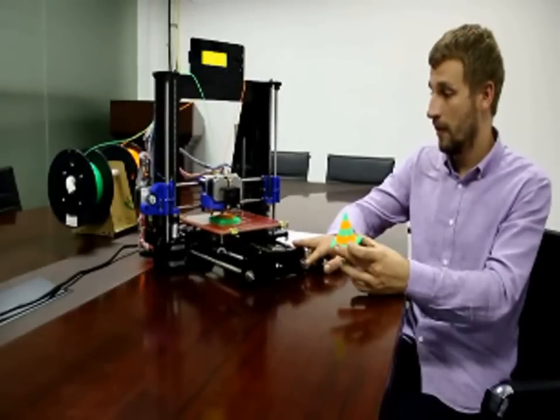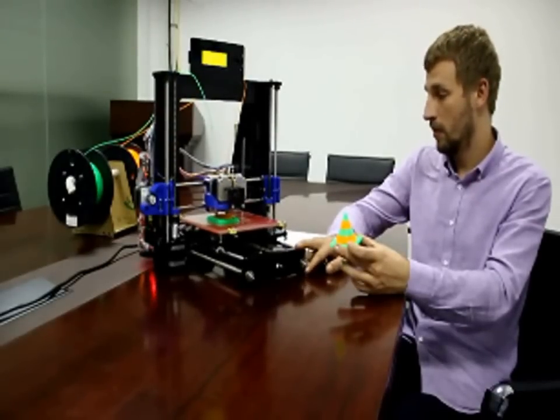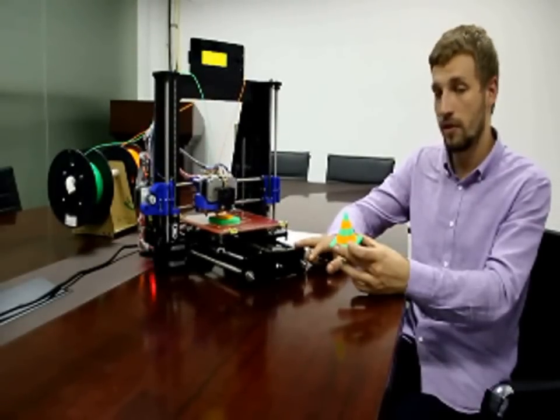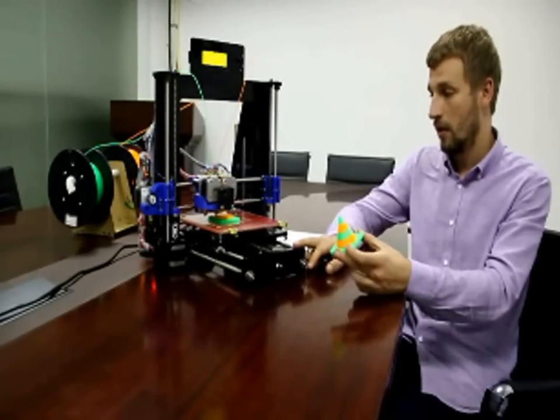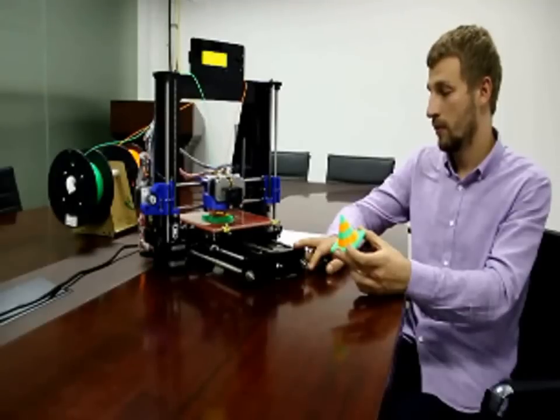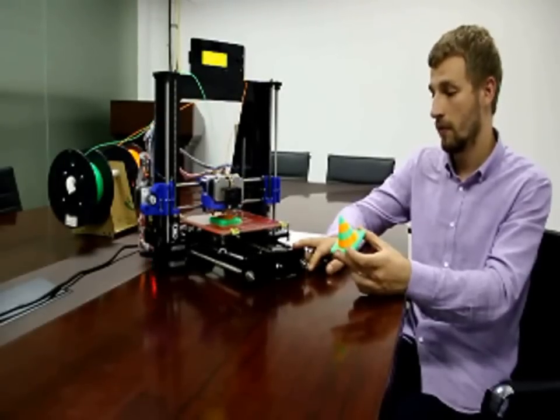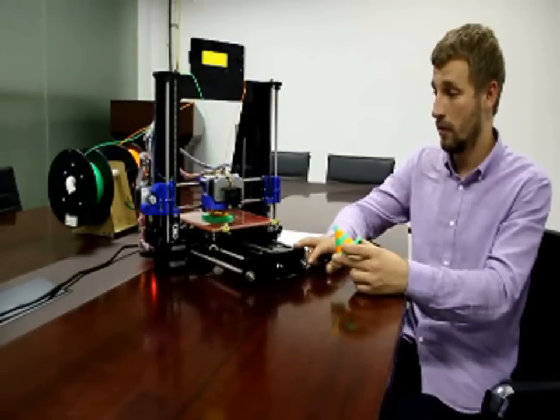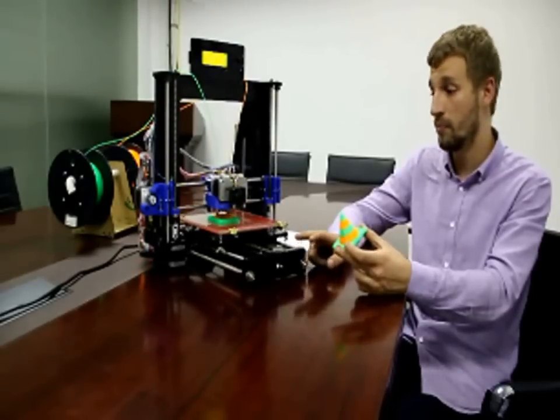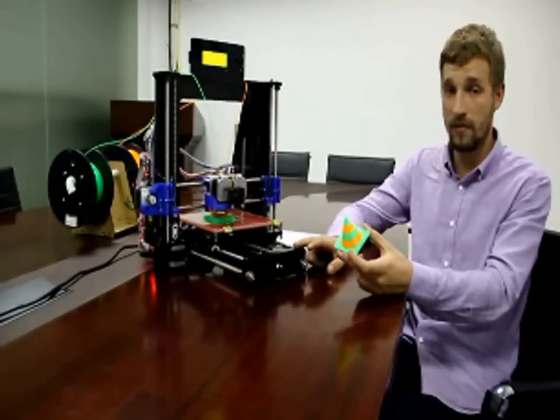Another difference is that here they are using a new control system, GT2560 control board. It replaced the old one, Arduino 2560 plus 1.4 RAMPS. So this control board is much faster, so now printing is much faster and easier.